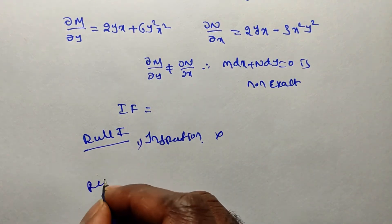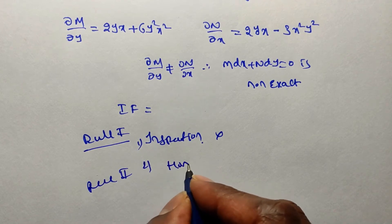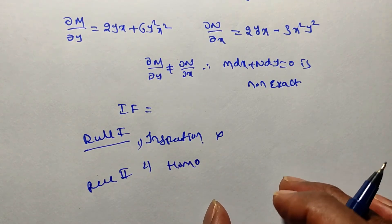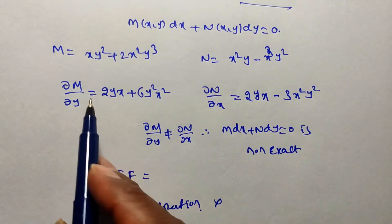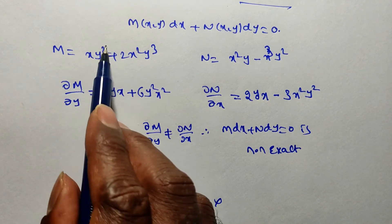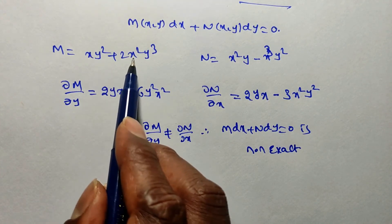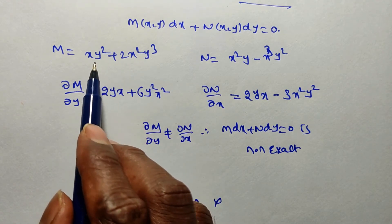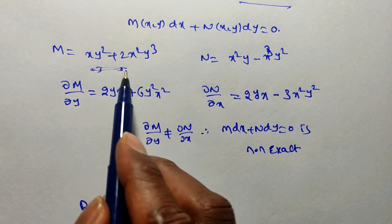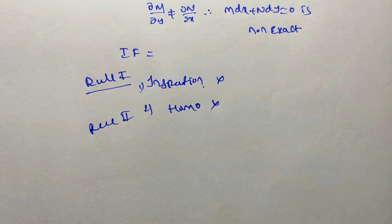Rule 2 applies to homogeneous differential equations, meaning M and N should be homogeneous of the same degree. In M, the first term xy² has degree 3, and 2x²y³ has degree 5 — they are not equal. So M is non-homogeneous, and the homogeneous method is also not applicable here.